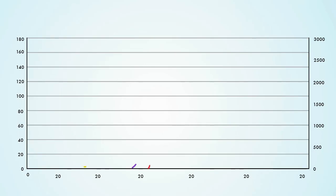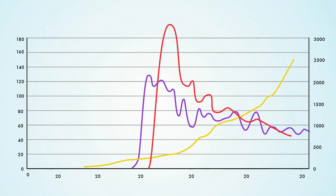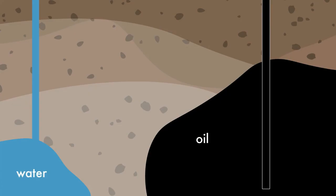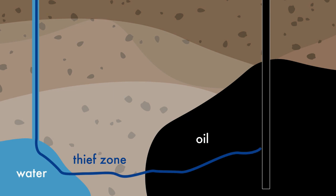The initial breakthrough, or first detection of the tracers, is particularly important, as it can indicate the presence of high permeability thief zones that dramatically reduce the efficiency of water flood and EOR operations.